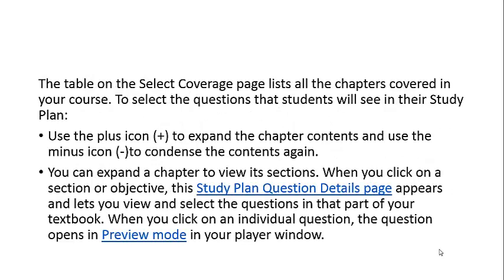The table on the Select Coverage page lists all the chapters covered in your course. To select the questions that students will see, use the plus sign to expand chapter contents and the minus sign to condense them. When you expand a chapter, you can view its sections. When you click on a section or objective, the Study Plan Question Details page will appear and let you view and select the questions in that part of your text.